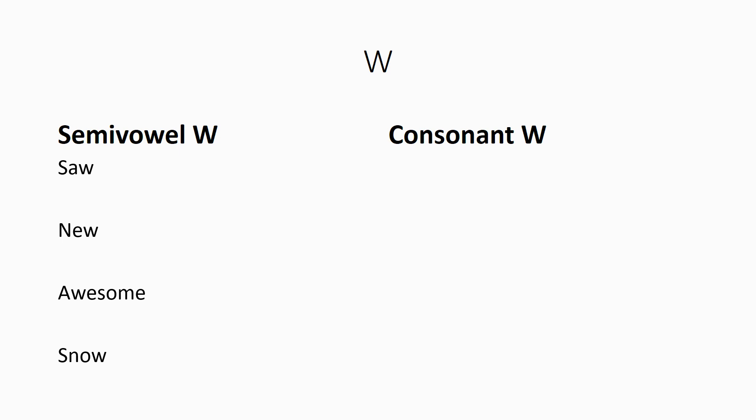But if it comes at the beginning of the word or syllable and it has the W sound, then it is a consonant. Notice you're bringing your lips very close together — you're using your lips to make the sound, and that's one of the definitions of consonant. So, if you say we, or walk, or west, or was, or any other words that begin with the letter W and make the W sound, then it's a consonant. Understand when W's a vowel and when it is a consonant.